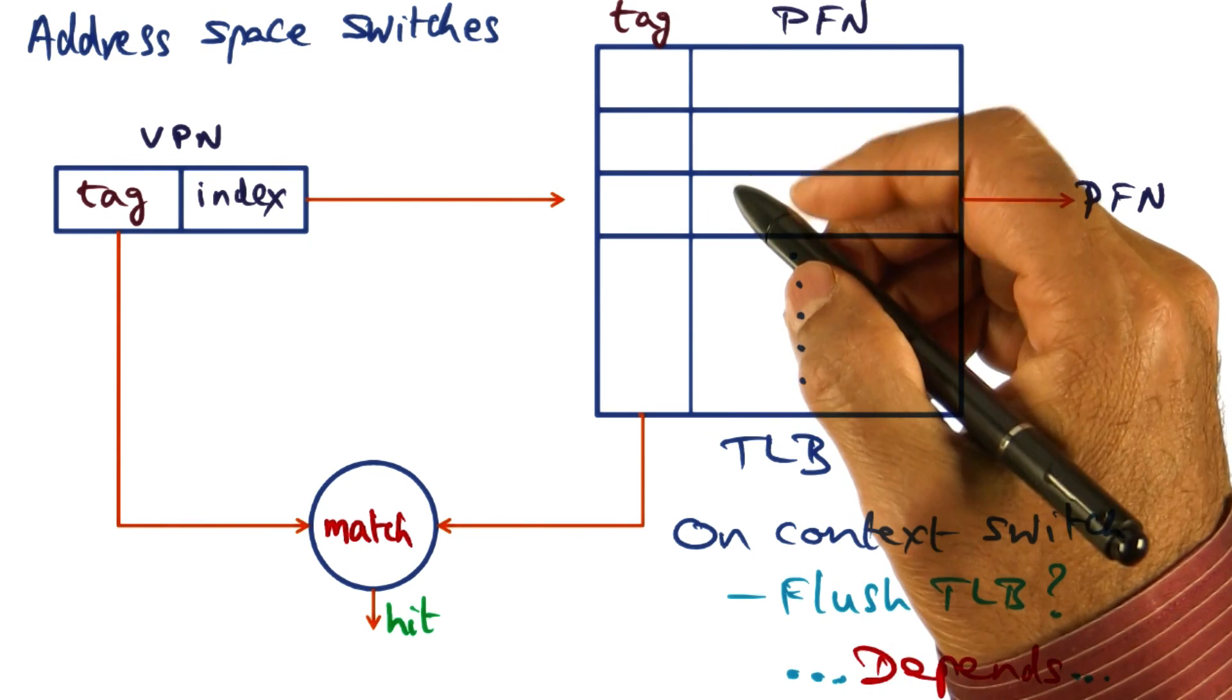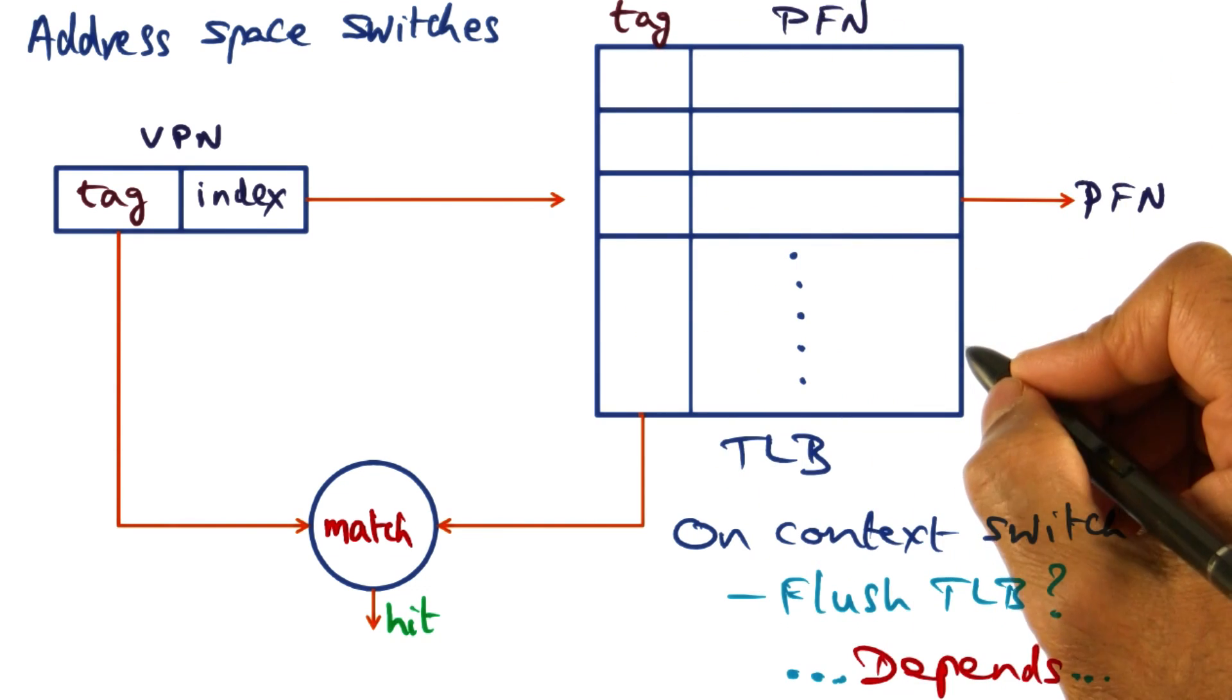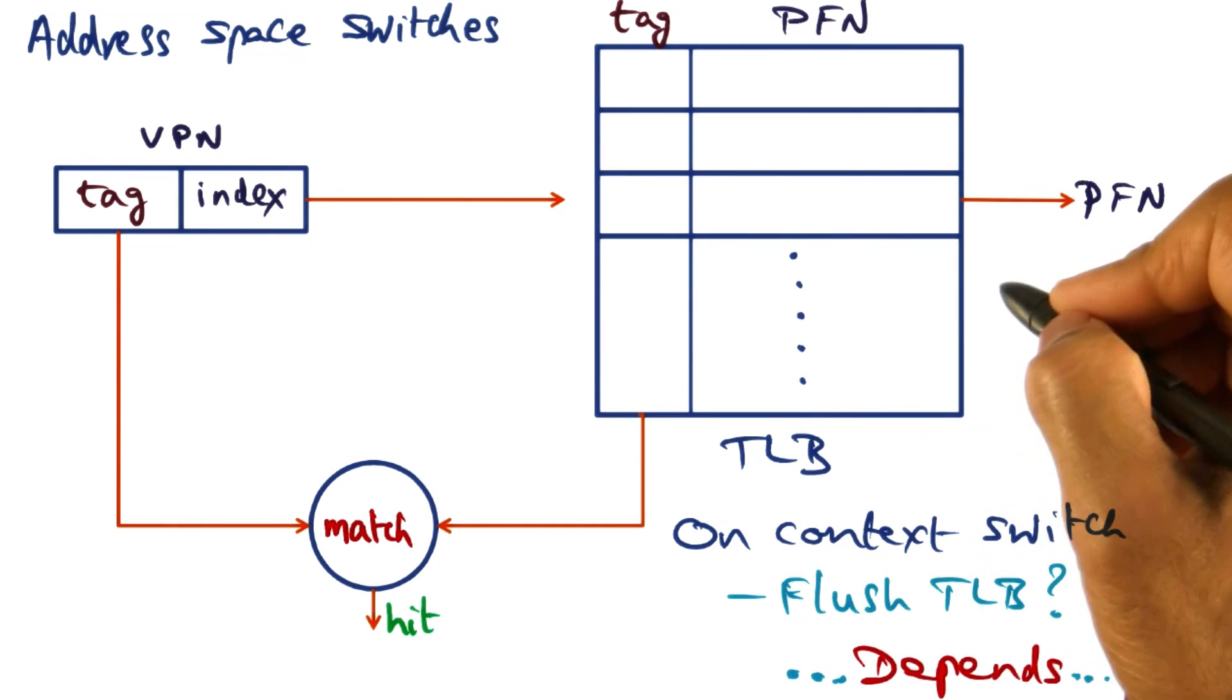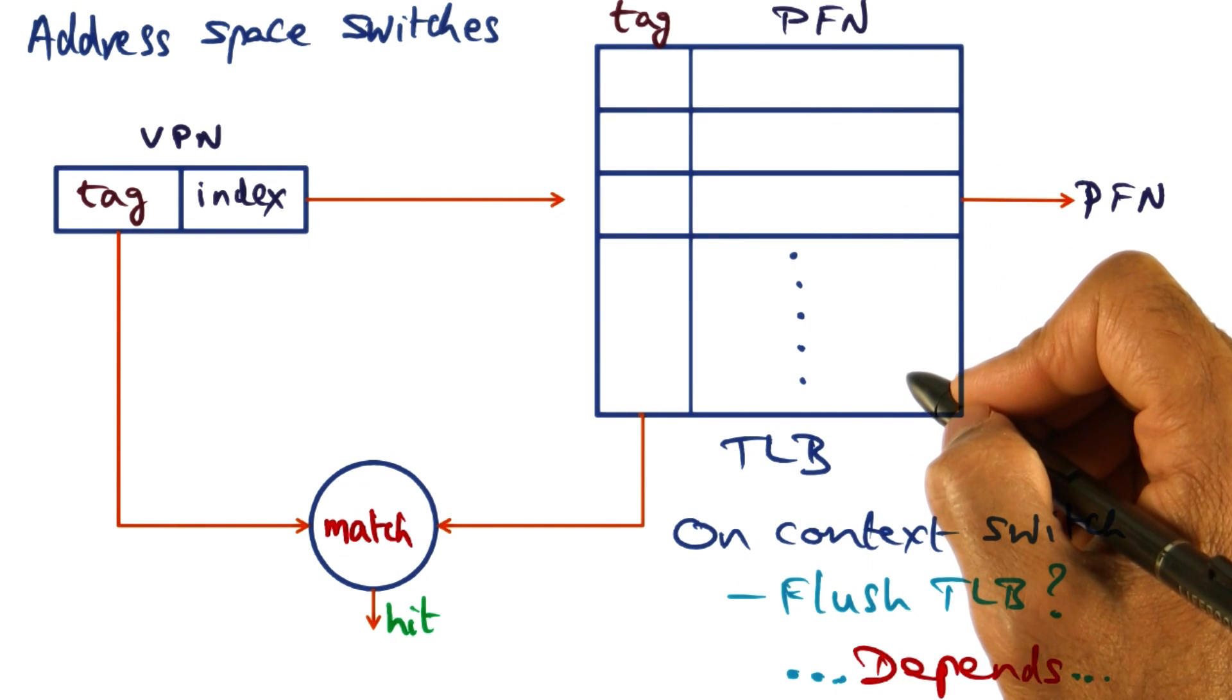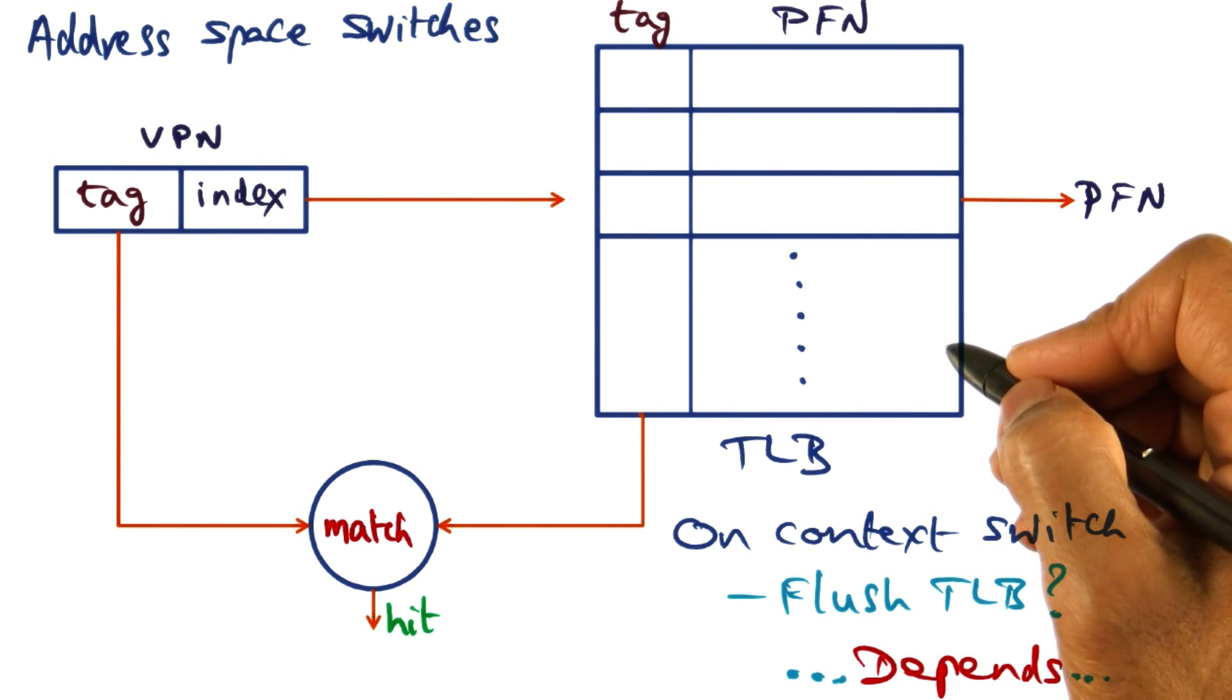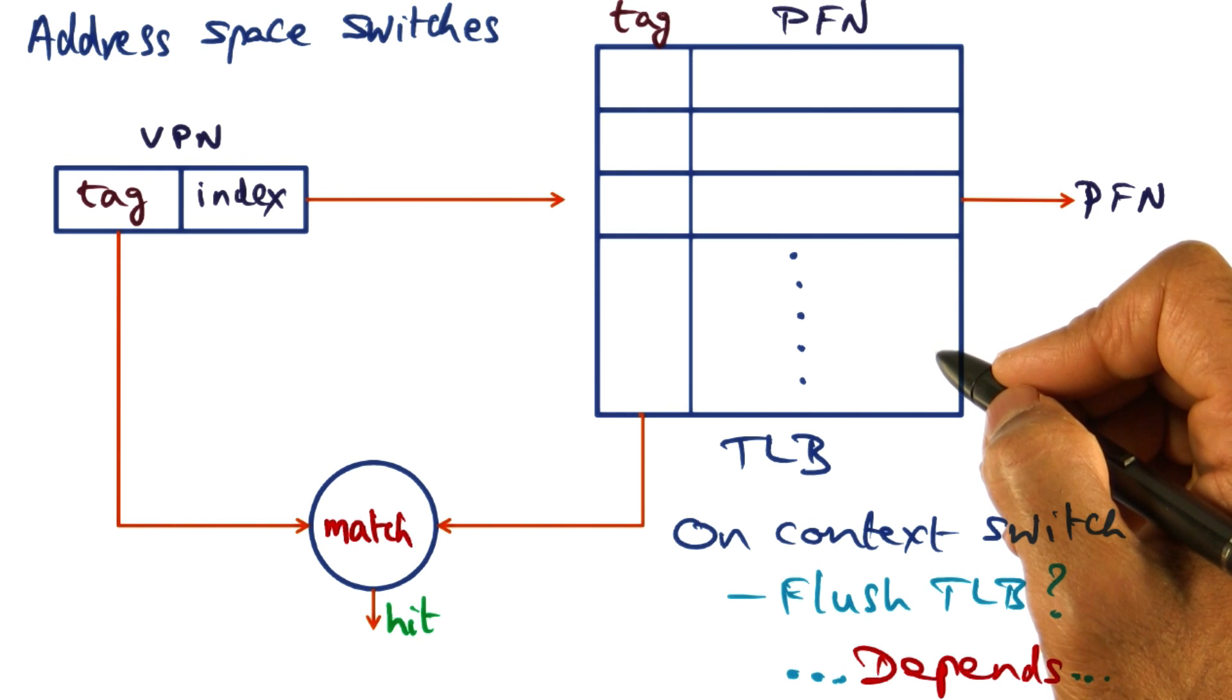So in an Intel architecture, at the point of the context switch, you have to throw away all the entries that are there in the TLB on behalf of the process.